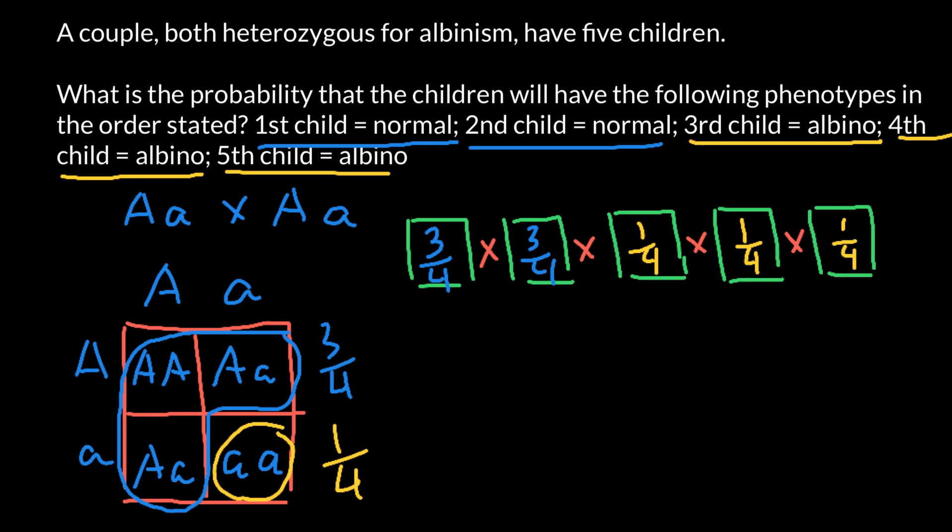So basically now we have to multiply three by three, we are going to get nine. Multiplied by one, going to be nine. Multiplied by one, going to be nine. And multiplied by one, going to be nine. So we would have nine here. And four multiplied by four would be sixteen, multiplied by four would be sixty-four.